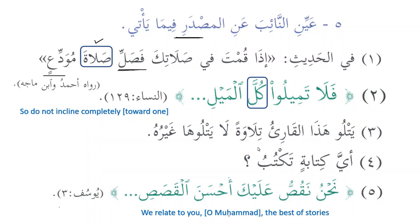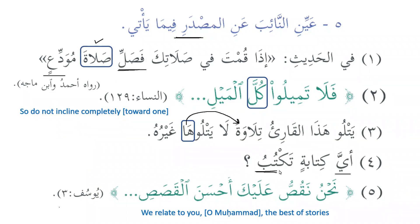Now we have to see where is naib al-masdar. Here we have ha — as we have learned, there must be a damir that goes back to the noun. Here we have tilawatan and la yatluha ghayruhu, so ha is being used as naib al-masdar. Then we have ayya kitabatin taktubu. Ayya is mansoob because it is maf'ul bihi of taktubu.